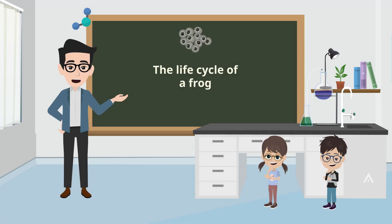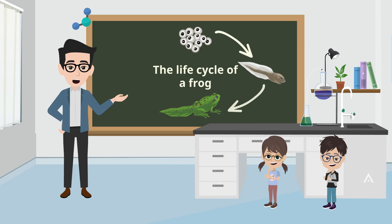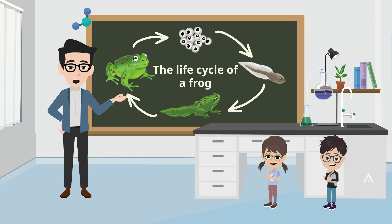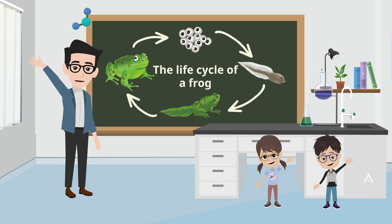In general, a frog starts off from an egg, then it develops into a tadpole that has a tail. As the tadpole develops, it grows legs and its tail becomes shorter. The tadpole becomes a froglet before turning into an adult frog. The life cycle eventually repeats itself. Great job on completing the video — I hope to see you soon!